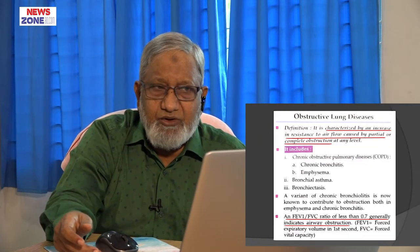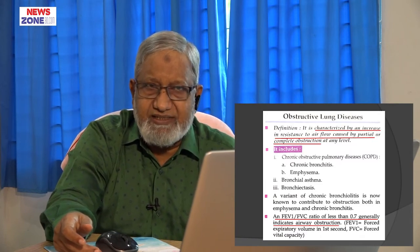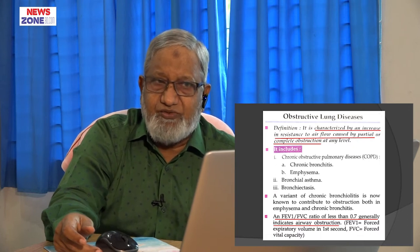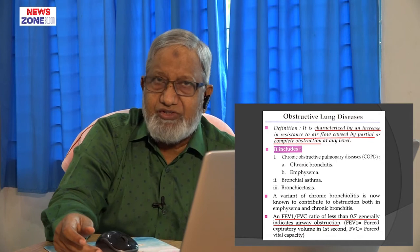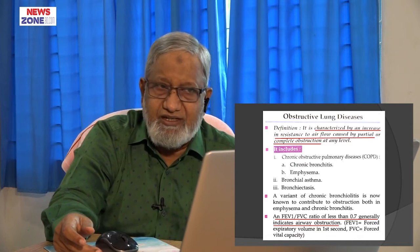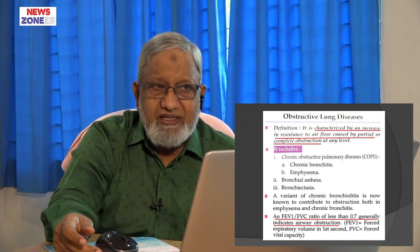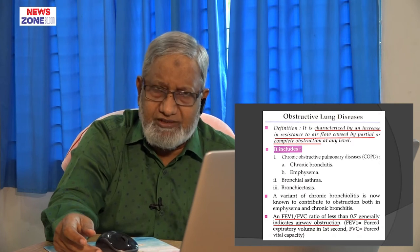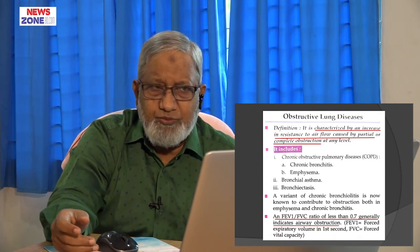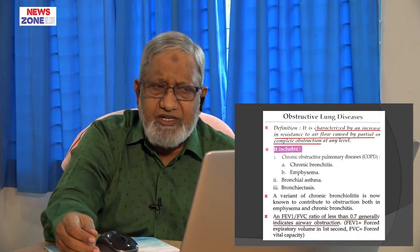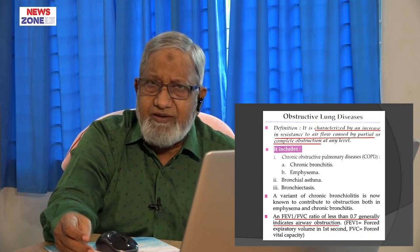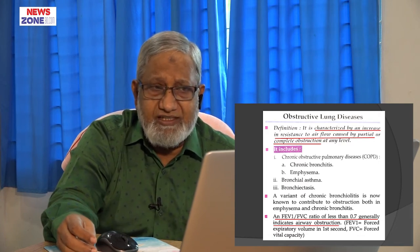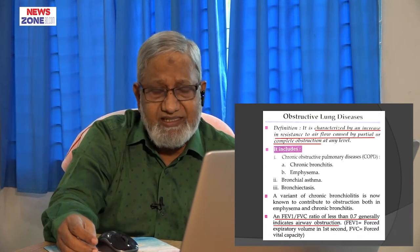Next is an important subject — obstructive lung diseases. Obstructive lung diseases are characterized by increase in resistance to airflow, caused either by partial or complete obstruction at any level. Dear students, you must memorize these four diseases — it is very important for viva: chronic bronchitis, emphysema, bronchial asthma, and bronchiectasis.